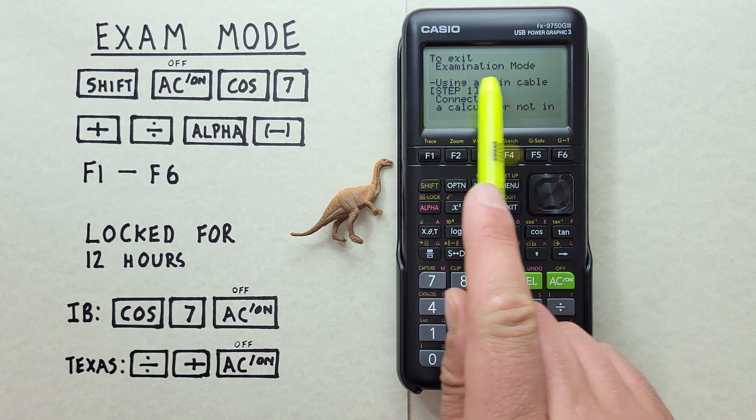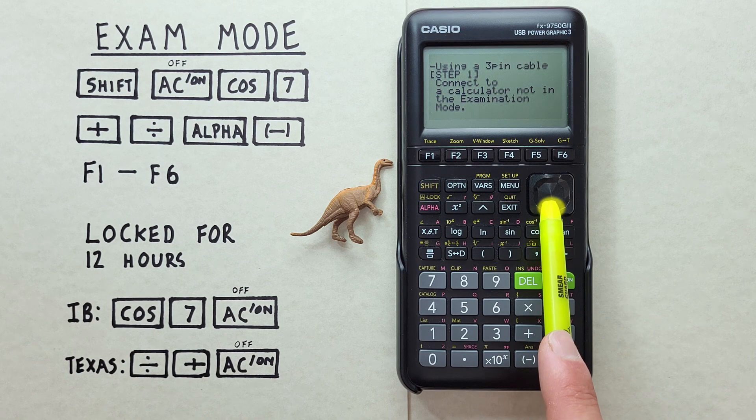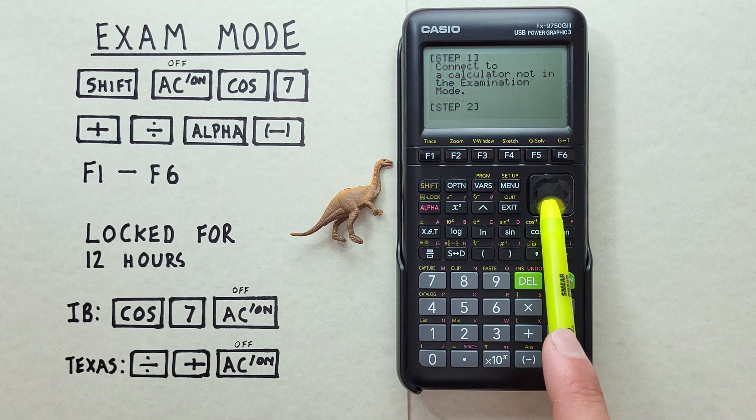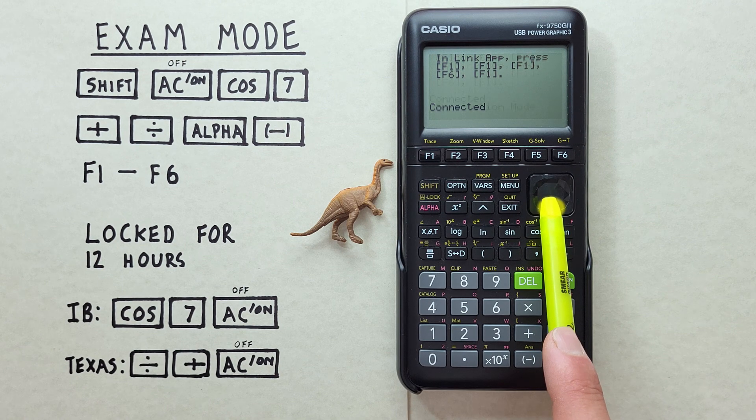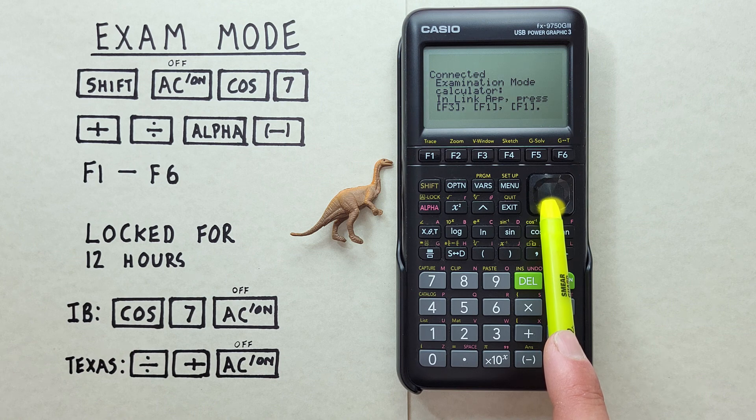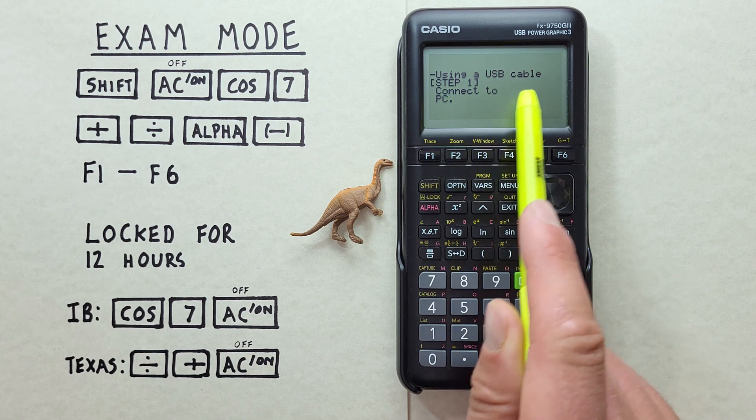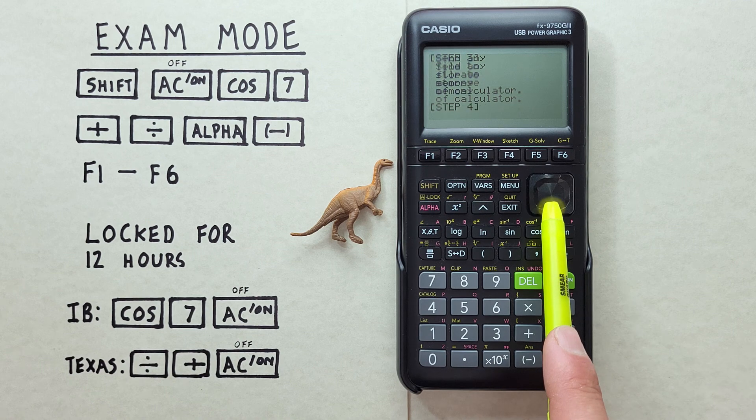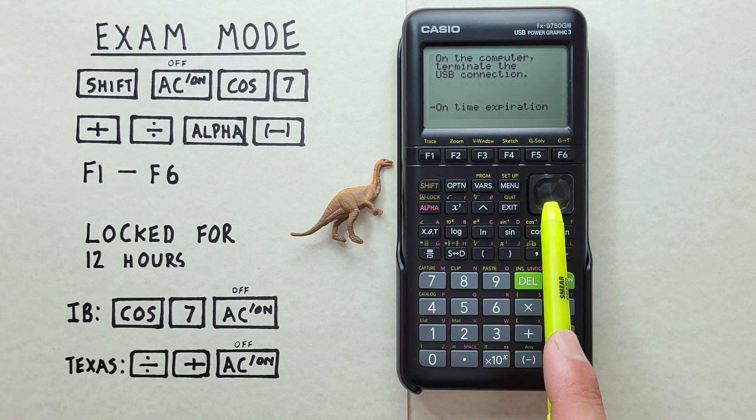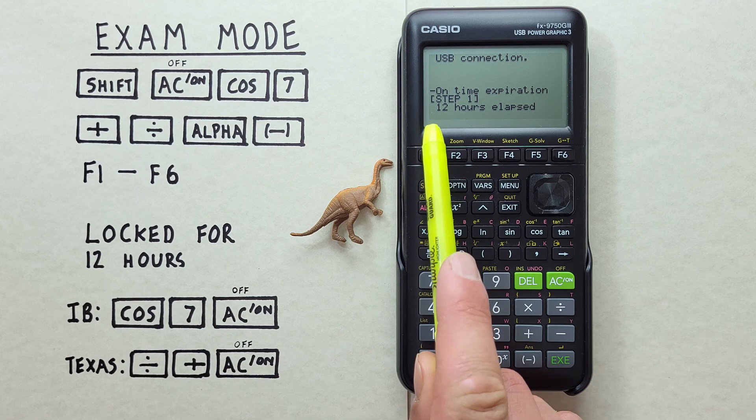This just tells us how to turn off Exam Mode. There are some ways to do it. Like, first, using a 3-pin cable to connect the calculator that is in Exam Mode to another calculator that is not in Exam Mode. And then go through a series of steps. The second option is to connect your calculator via USB cable to a PC. And again, go through a series of steps here. But these are all fairly extensive, and you won't be able to do these in class if you're trying to do an exam.